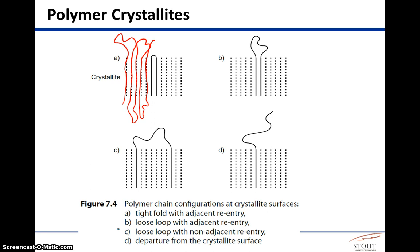With a tight fold and adjacent reentry, polymer B comes in and immediately folds right back in, completing that loop. You could also have a loose fold with adjacent reentry, where it has a random area and then reenters right next to the previous segment. A loose loop with non-adjacent reentry means the chain leaves and then rejoins at a different position.